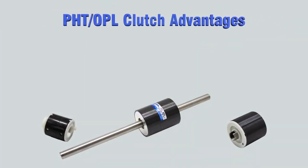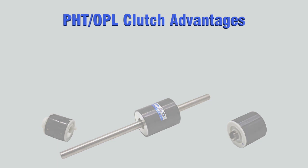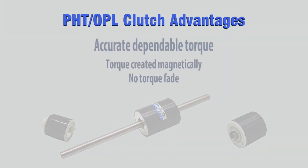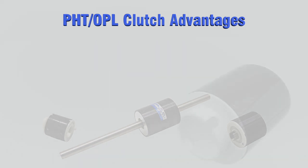PHT OPL clutch advantages. Since torque is created magnetically, there is minimum difference between static and dynamic torque. Units are also unaffected by friction and wear. Since there is no frictional wear, except for minor wear on particles in OPL, units are able to hold their torque over an extremely long life.